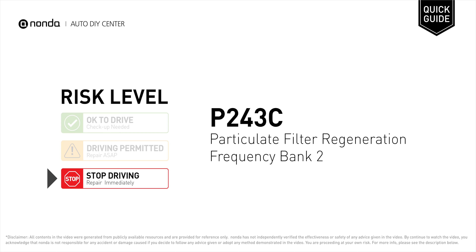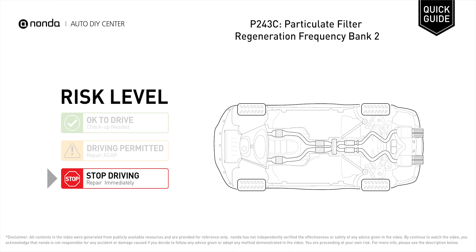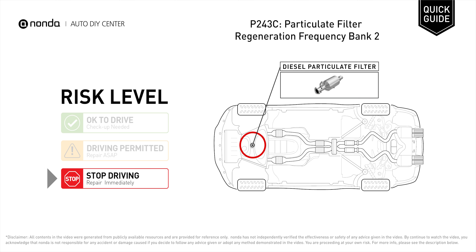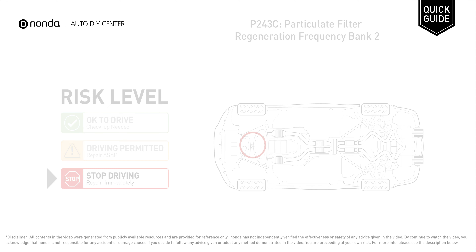P243C is a diagnostic trouble code for particulate filter regeneration frequency bank 2. Under this circumstance, stop driving and repair your vehicle immediately. It indicates that the PCM has detected that the regeneration frequency of the diesel particulate filter is not conforming to a predefined and specified rate.